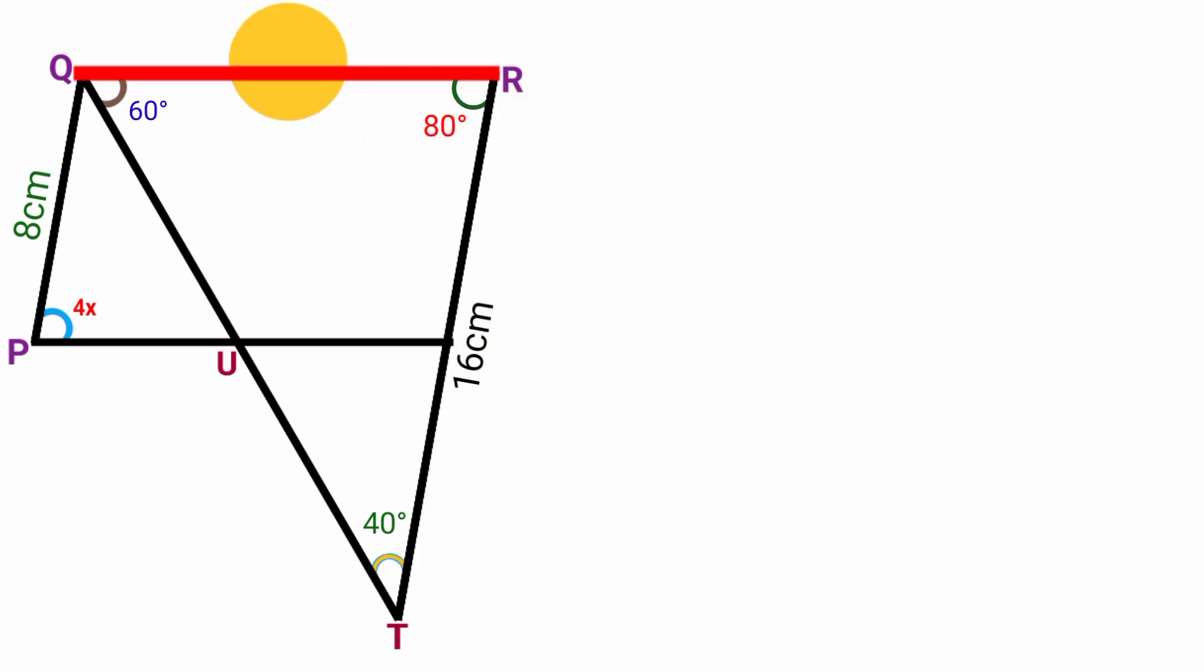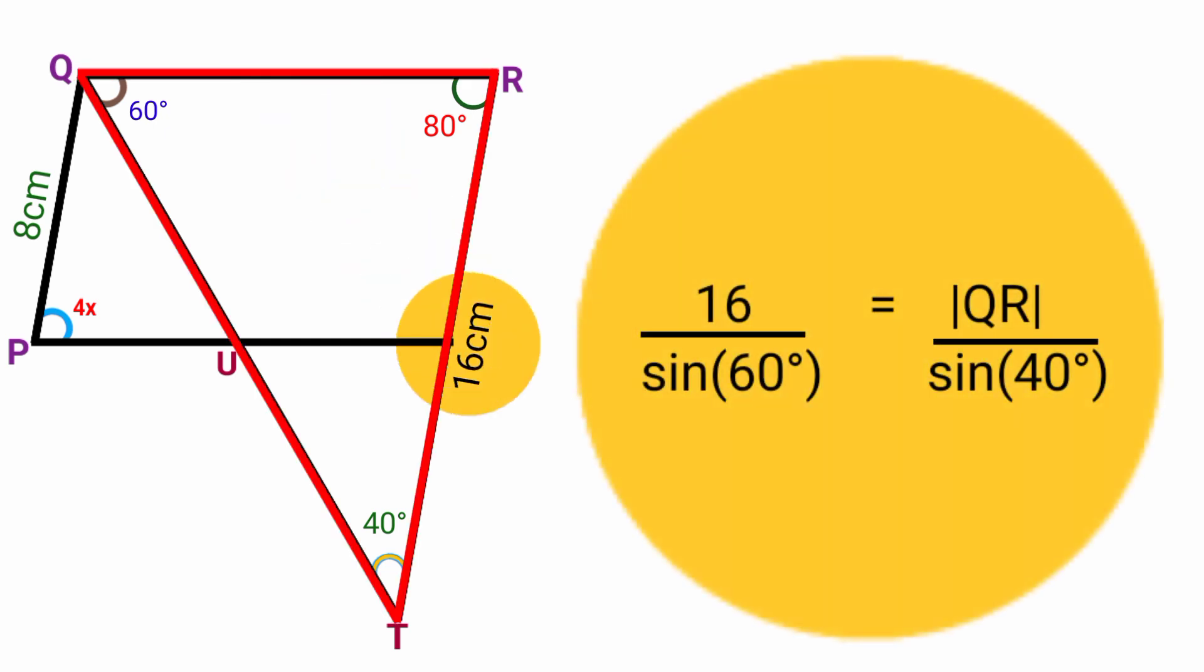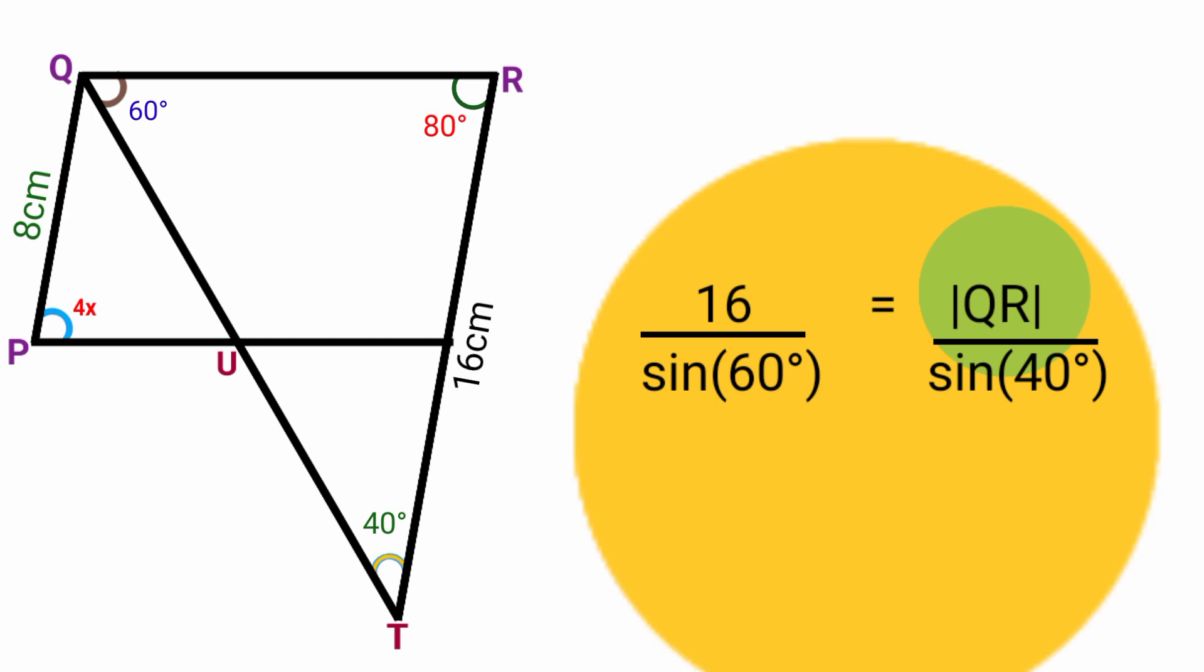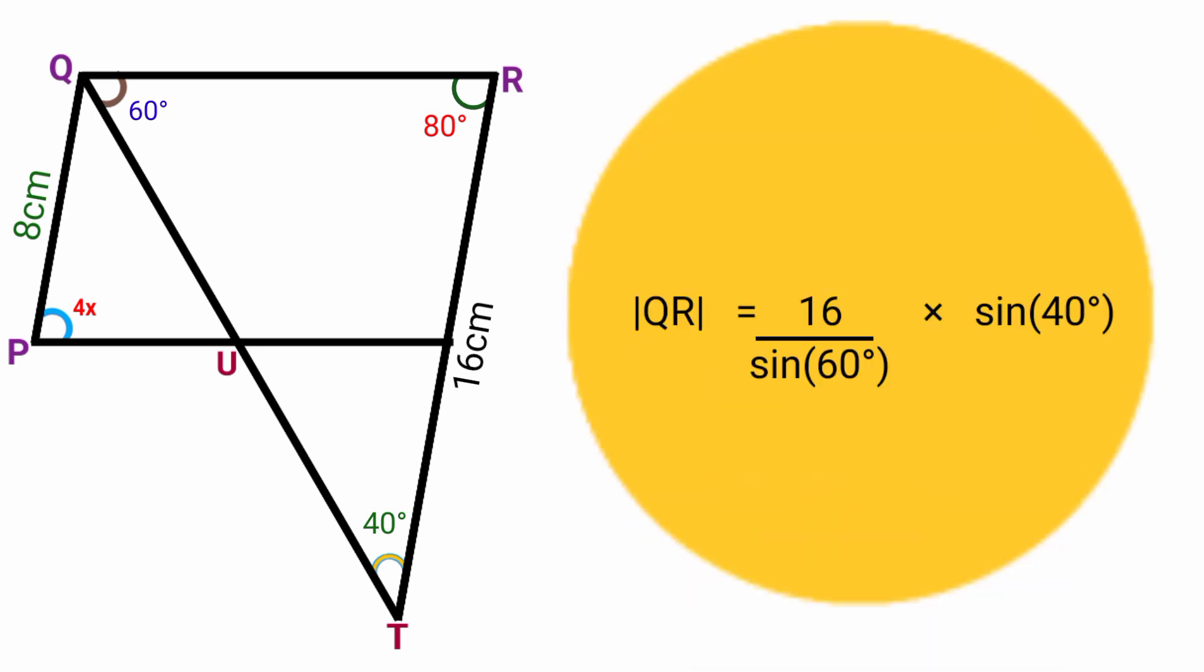To find the length of line QR, use the sine rule: 16 over sine 60 degrees equals line QR over sine 40 degrees. Making line QR the subject of the formula, line QR equals 16 over sine 60 times sine 40 degrees. Sine 60 degrees is 0.866 and sine 40 degrees is 0.6428. So line QR equals 16 over 0.866 times 0.6428. Press your calculator: line QR equals 11.8762, which approximately equals